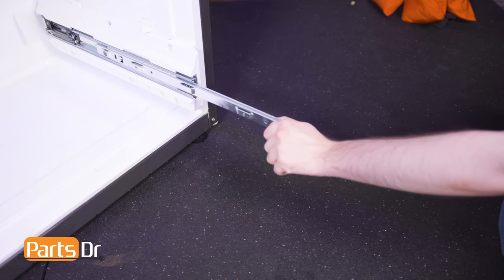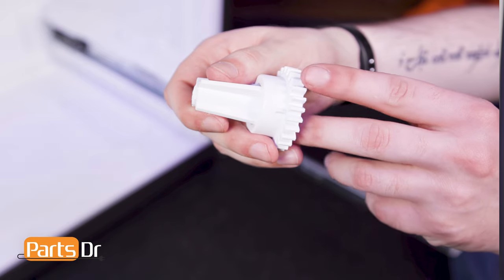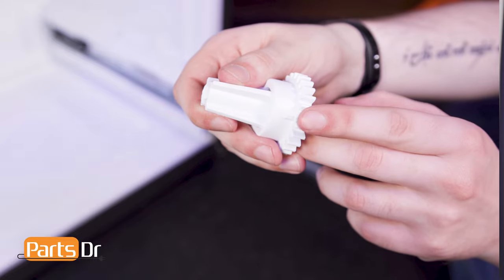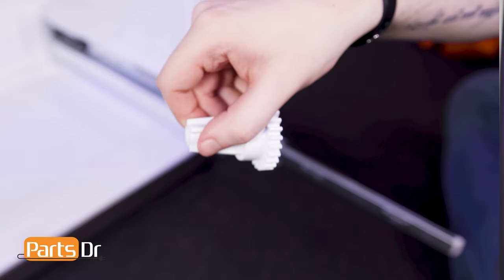Reinstall the pinion gear by fully extending the drawer glide, aligning the gear with the tab facing down and snapping it back into place. It is important to ensure the glides are fully extended or the gear may not align properly.